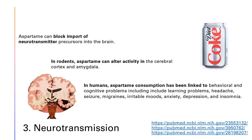Artificial sweeteners can also screw up neurotransmission. Aspartame — the sweetener in Diet Coke — can block the import of neurotransmitter precursors into the brain. Dopamine, serotonin, norepinephrine, and epinephrine have precursors called tyrosine and tryptophan respectively for the catecholamine and indolamine neurotransmitters. Aspartame can block the import of those building blocks into the brain, disrupting neurochemistry. Rodent models also show aspartame can alter activity in the cerebral cortex and the amygdala — the fight-or-flight anger system. In humans, associative studies link aspartame consumption with behavioral and cognitive problems including learning problems, headaches, seizures, migraines, irritable moods, anxiety, depression, and insomnia. Taken together — the mechanism, animal data, and human association studies — I think it makes a strong case that artificial sweeteners interfere with neurotransmission.